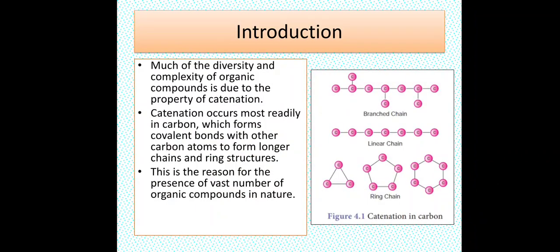Much of the diversity and complexity of organic compounds is due to the property of catenation. Catenation occurs most readily in carbon which forms covalent bonds with other carbon atoms to form longer chain and ring structures. This is the reason for the presence of vast number of organic compounds in nature.